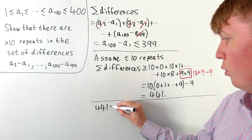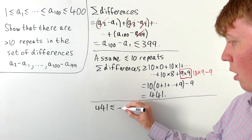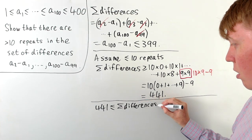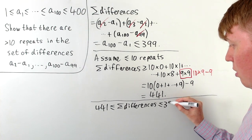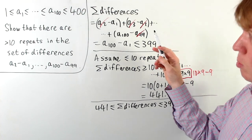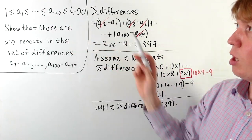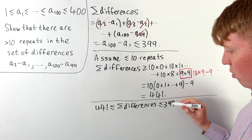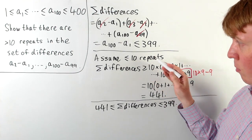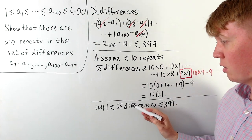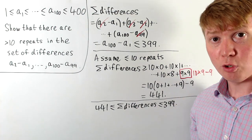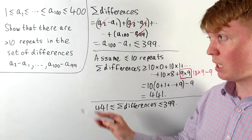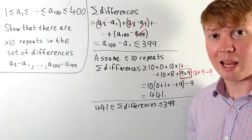This is a problem: 441 is our lower bound on the sum of differences, but we showed the upper bound from the constraint that all numbers are between 1 and 400 is only 399. So to satisfy the constraint, the sum must be at most 399, but assuming at most 10 repeats forces it to be at least 441. This is a contradiction, so one of the differences must repeat more than 10 times.